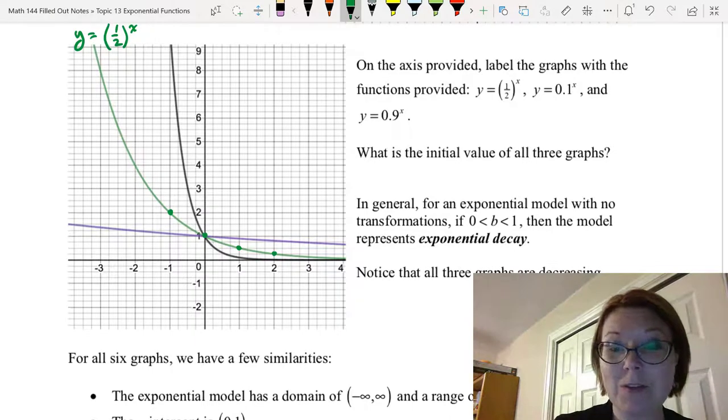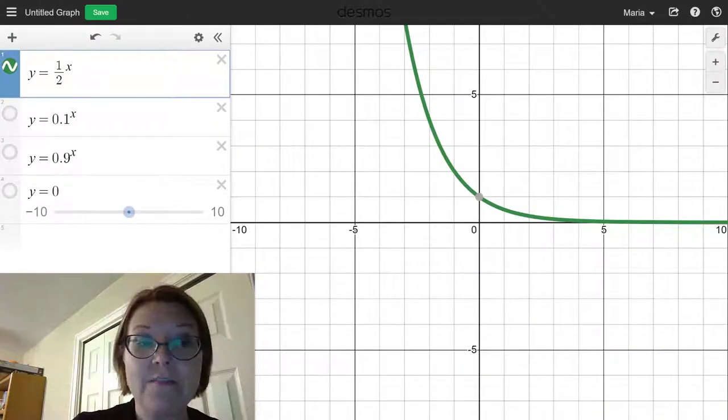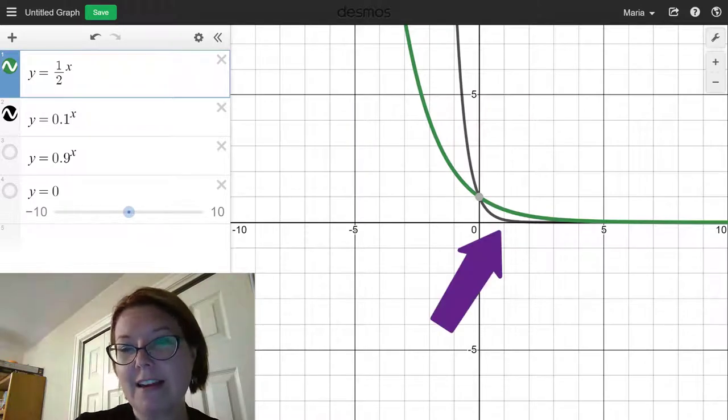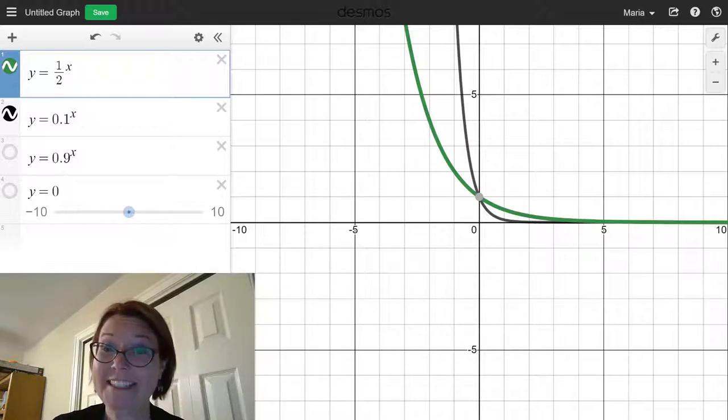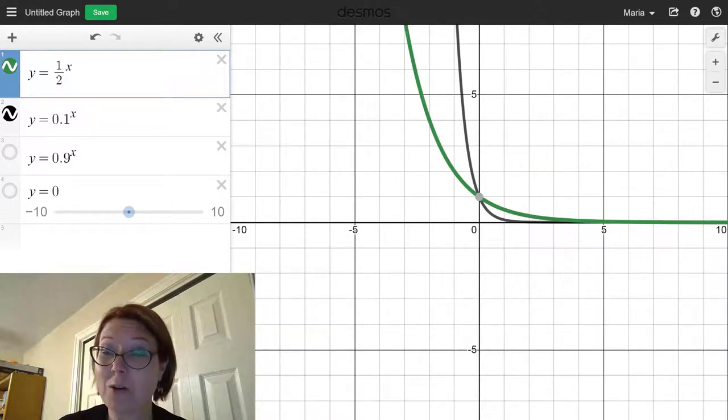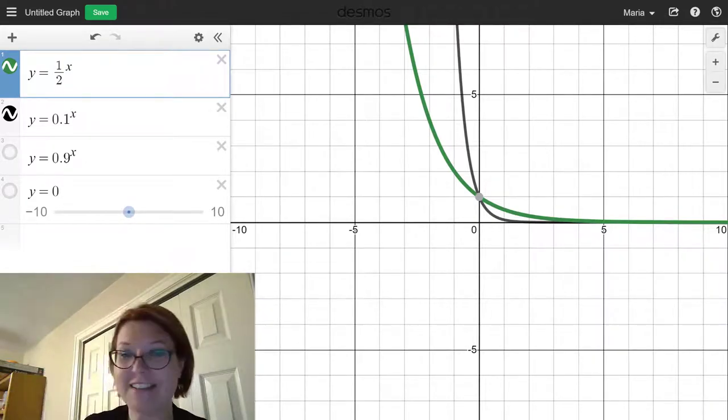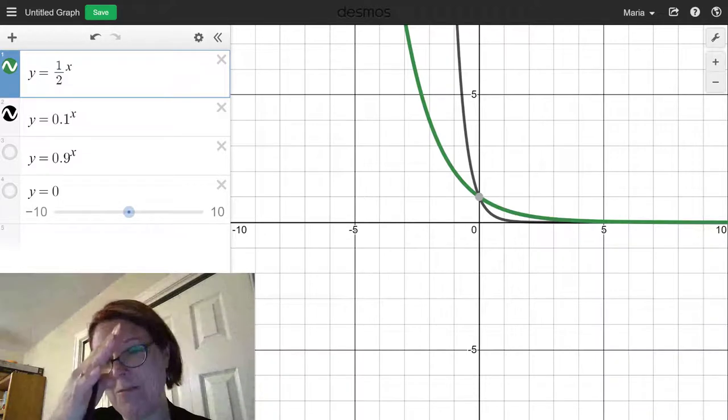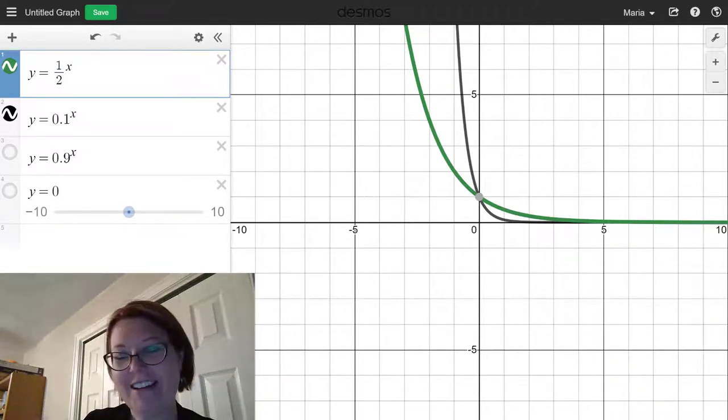Let's go back to Desmos and look at 0.1 to the x. I'm going to add the graph of 0.1 to the x, and what you'll see is that it's much closer to both the y-axis and the x-axis. So again, it's like we're coming off of a mountainside, but this is a really, really steep one. It's like you're coming down almost a cliff face, and you hit the y-intercept of 0, 1 when you get to the y-axis, and then almost immediately after that you go flat into the valley.